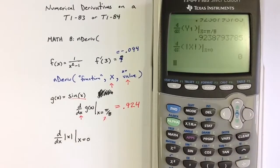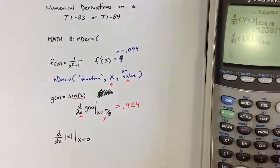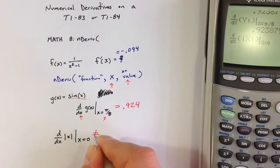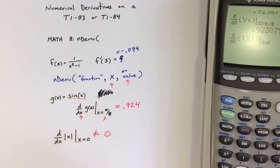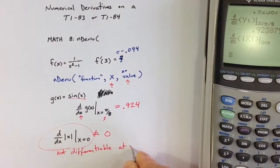The calculator works through some things, and it comes up with an answer of 0, but that's actually false. This answer should not equal 0 because this expression is actually not differentiable at x equals 0.